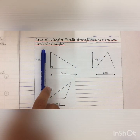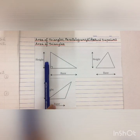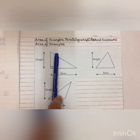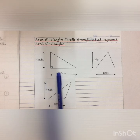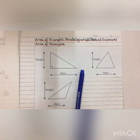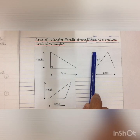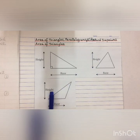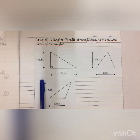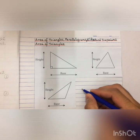Firstly, we are going to discuss the area of triangles. This is the first triangle — a right-angled triangle. This is the base, the length of the base, and this is the height. Same goes here: this is the height and this is the base. And this is the third triangle where this is your base and this is your height.